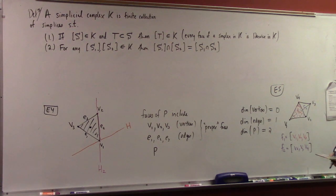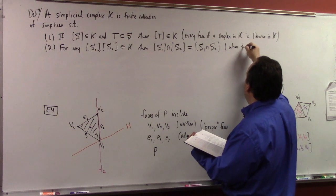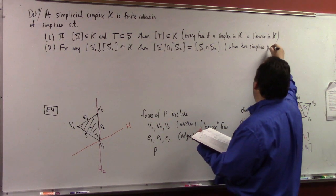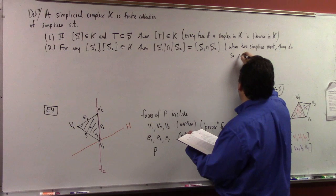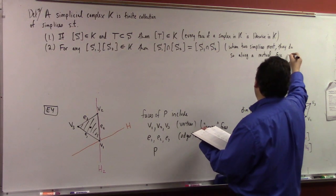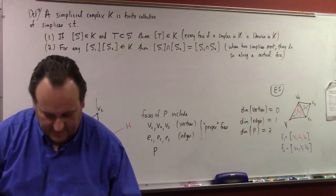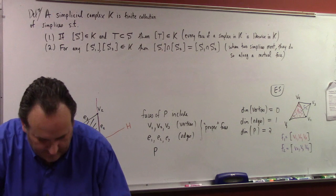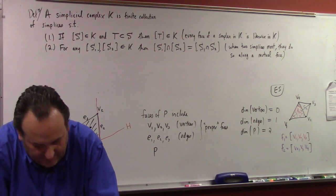What it says is the following: if two simplices meet, they do so along a mutual face. And of course, the face has to be in the simplicial complex because all faces of a given simplicial complex are in the simplicial complex as well.